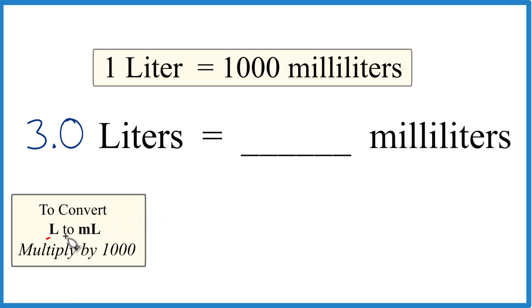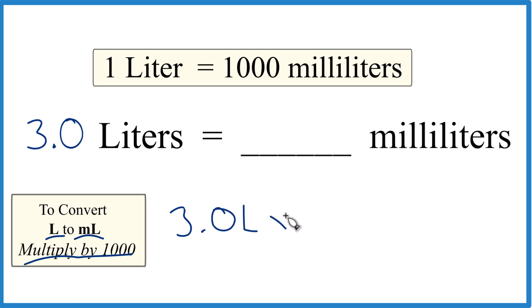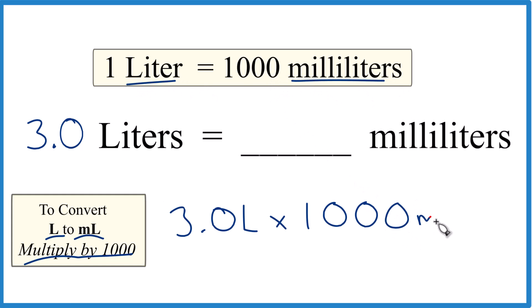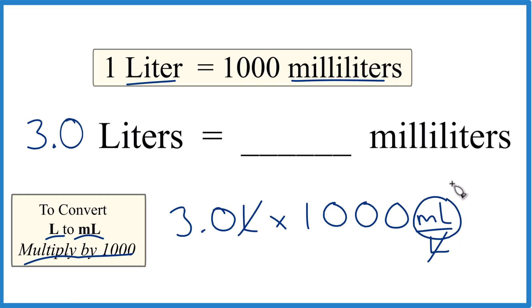So when we go from liters to milliliters, we multiply by 1,000, like this. 3.0 liters — we multiply that times 1,000, and that's 1,000 milliliters in a liter. So milliliters over liters there. We multiply liters on top and the bottom, they cancel out, and that's going to leave us with milliliters. That's what we're looking for.